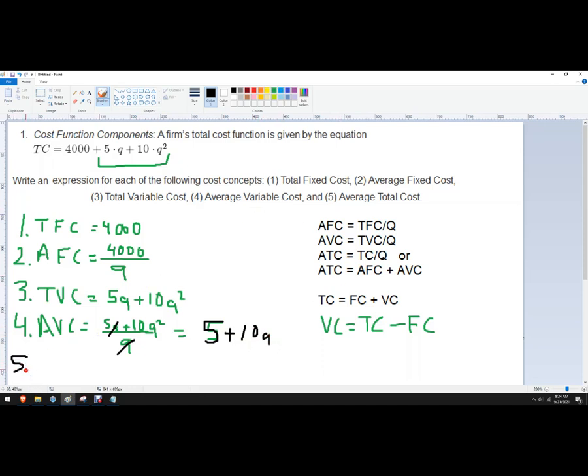And then finally, number five, average total cost. So it's your choice. You can add this. You can just put this plus that. And it gives you average total cost. So it would be 4,000 over Q plus 5 plus 10Q.